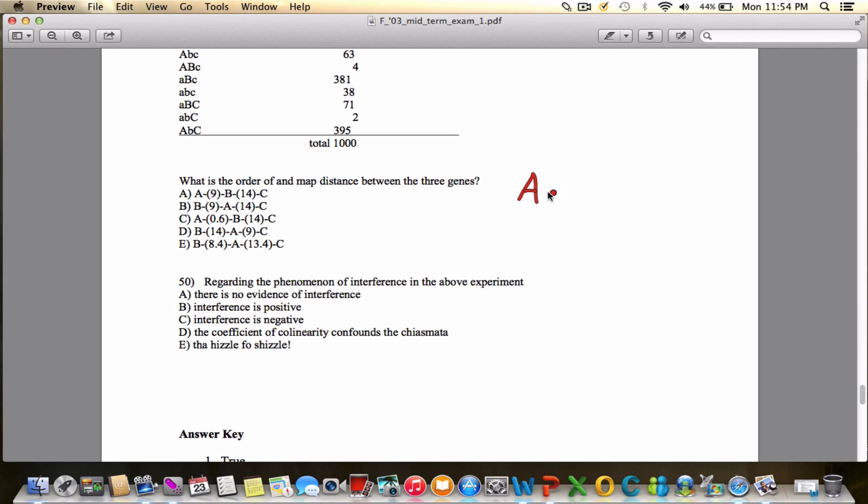We know the distances between A and B, and then B and C, right? Because we know that our answer was this, that it was B from here, that this was 9 map units, and that from A to C was 14 map units. So we want to figure out what interference is.